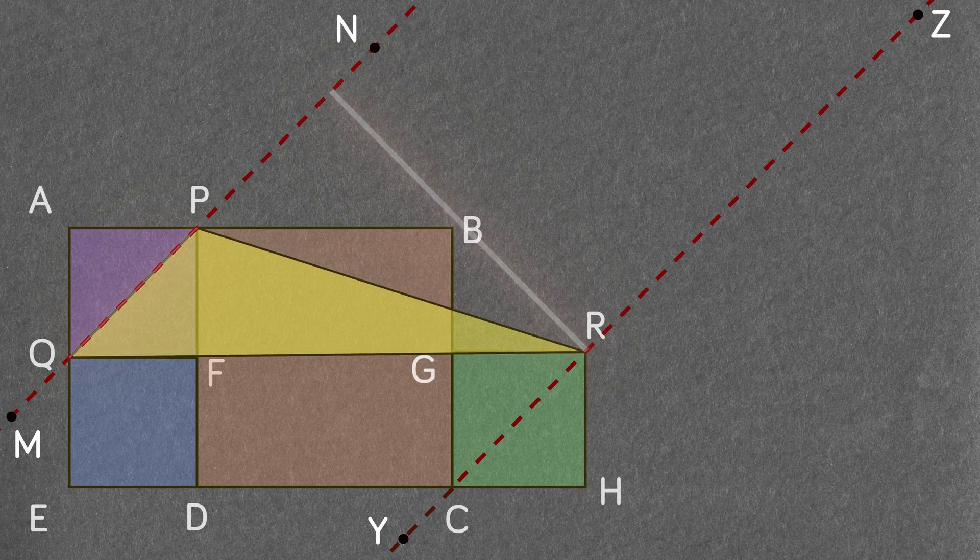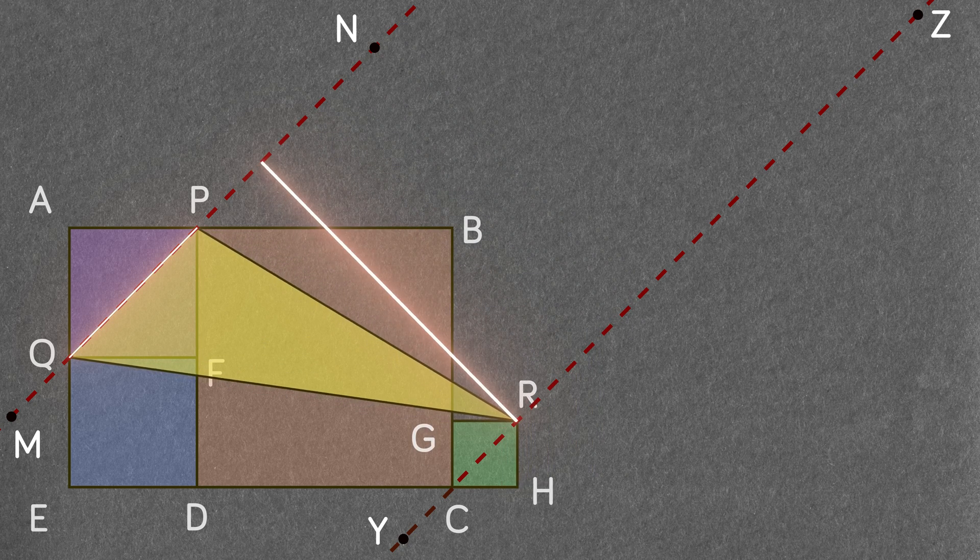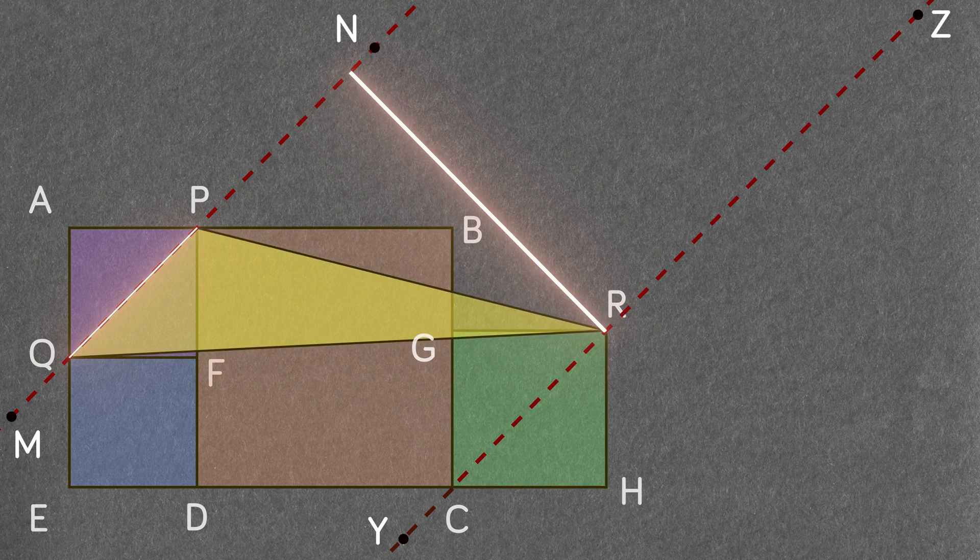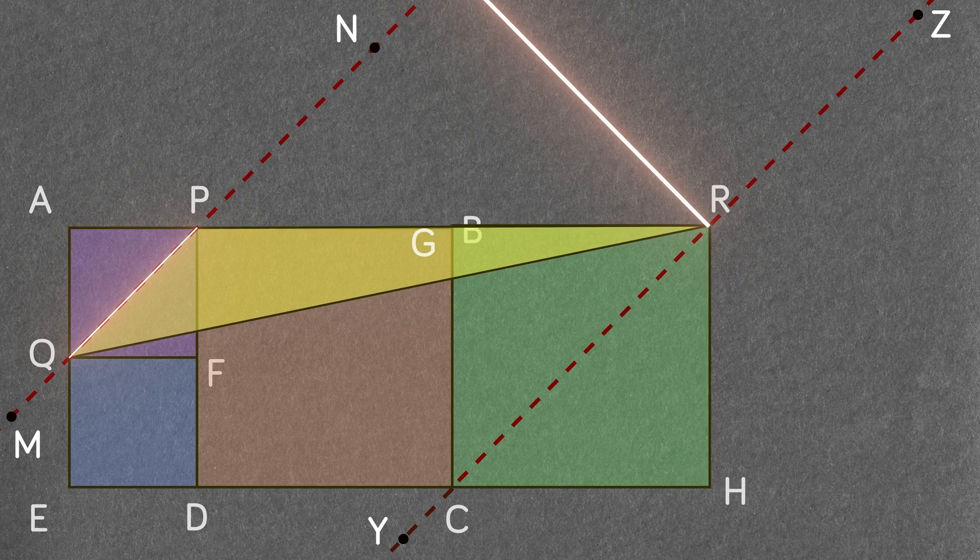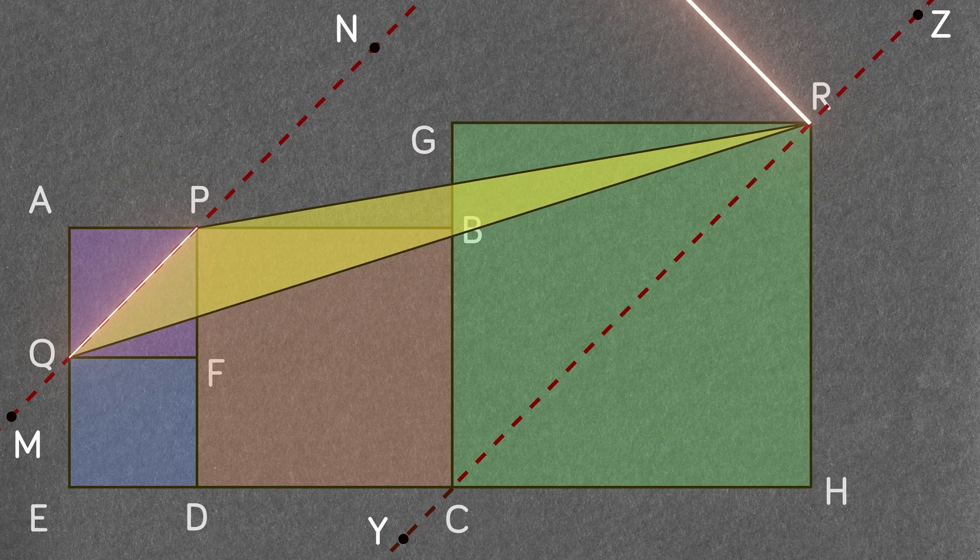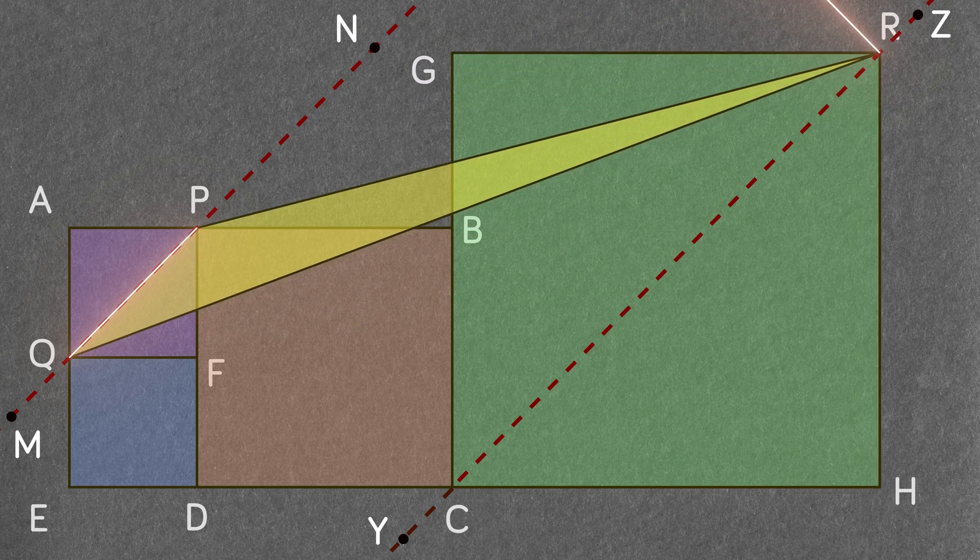And therefore the height of the triangle PQR will remain fixed between parallel lines MN and YZ, thus giving the same area irrespective of where the point R is located.